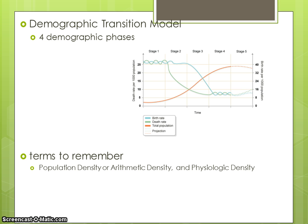Some terms to remember: population density, also called arithmetic density, is the number of people in a given unit of area. Physiologic density compares cropland and human population in less developed countries, showing that less developed countries may have more people and less land.